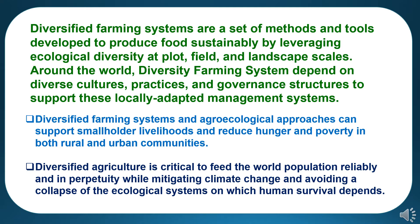Diversified farming systems and agroecological approaches can support smallholder livelihoods and reduce hunger and poverty in both rural and urban communities. Diversified agriculture is critical to feed the world population reliably and in perpetuity while mitigating climate change and avoiding a collapse of the ecological system on which human survival depends.